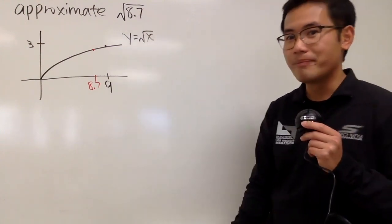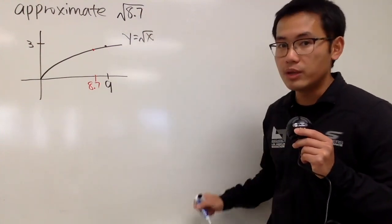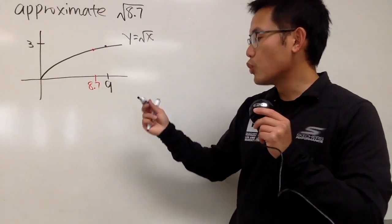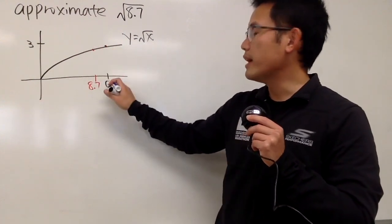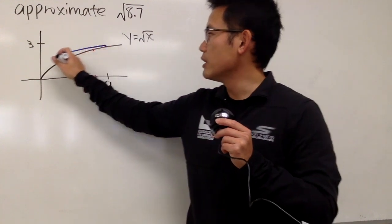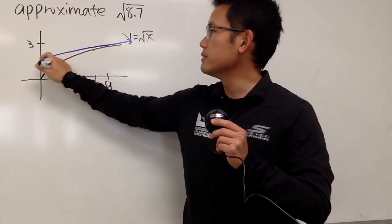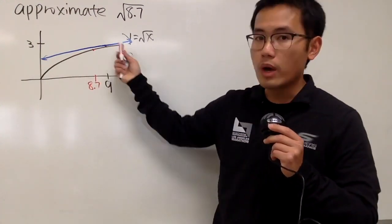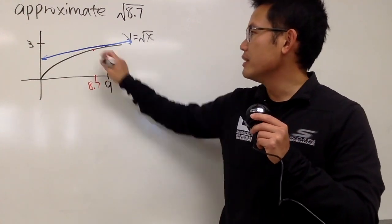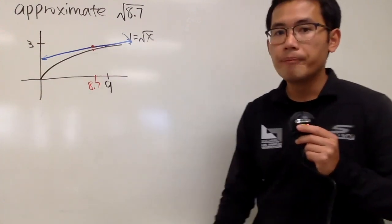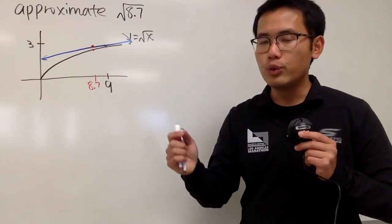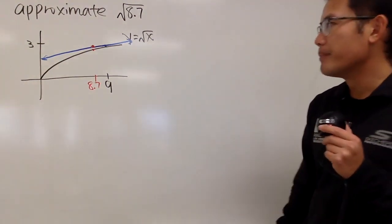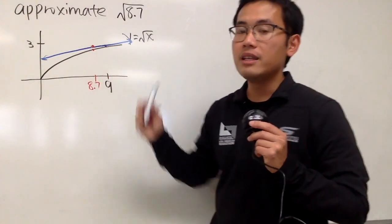But I cannot do that because that's what the question is asking. However, this is what we can do. Instead of putting down 8.7 onto the curve, let's first draw a line tangent to square root of x when x is 9. And instead of putting 8.7 into the square root, I am going to put 8.7 into the tangent line equation, because the tangent line equation has the form y = mx + b, and it's really easy to compute. So let's go ahead and find the equation of the tangent line first.